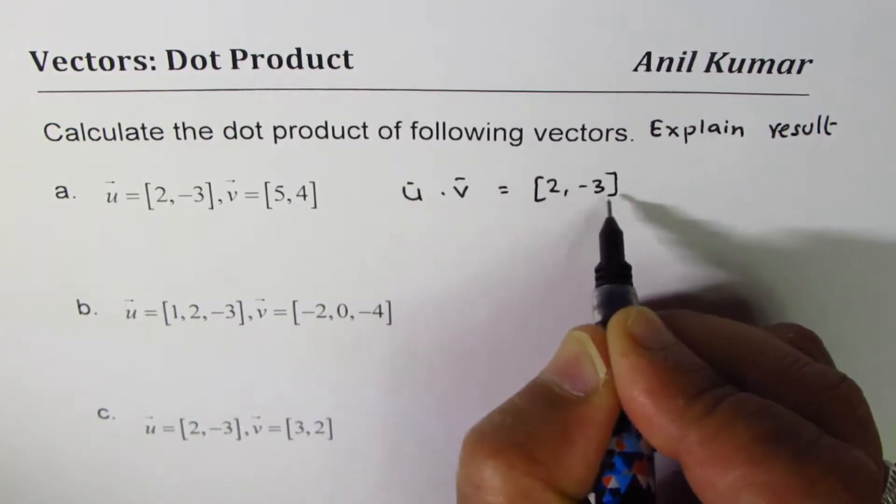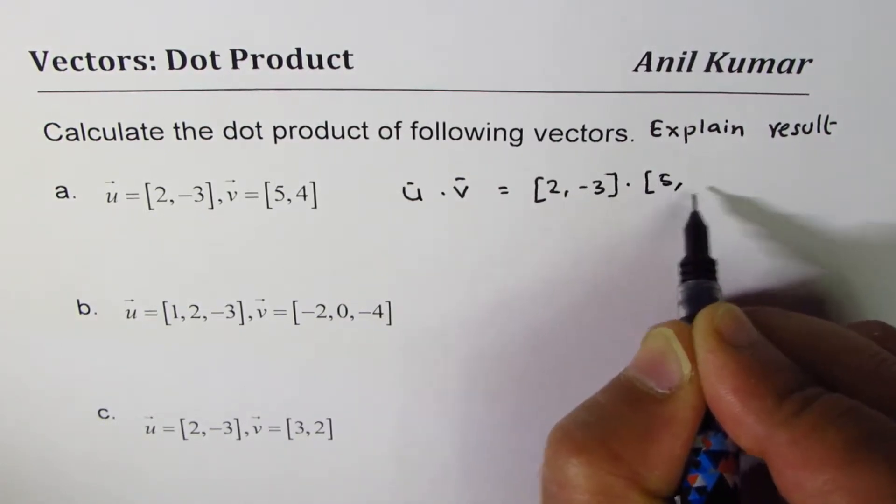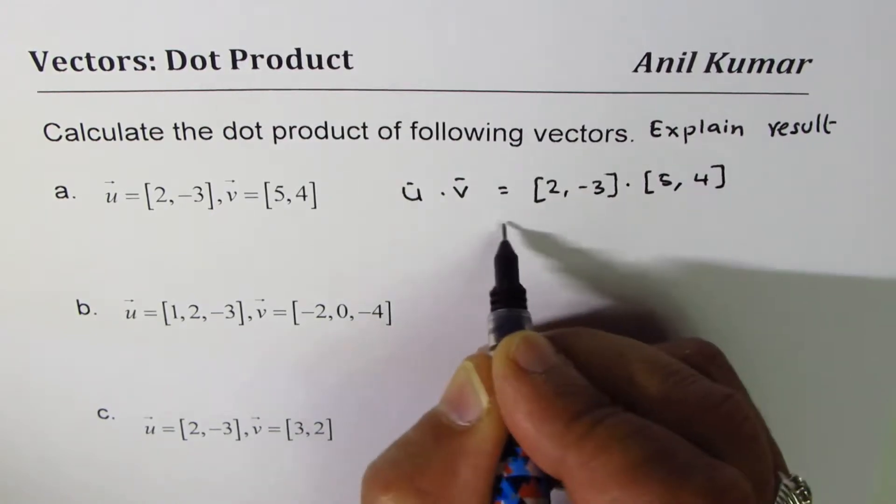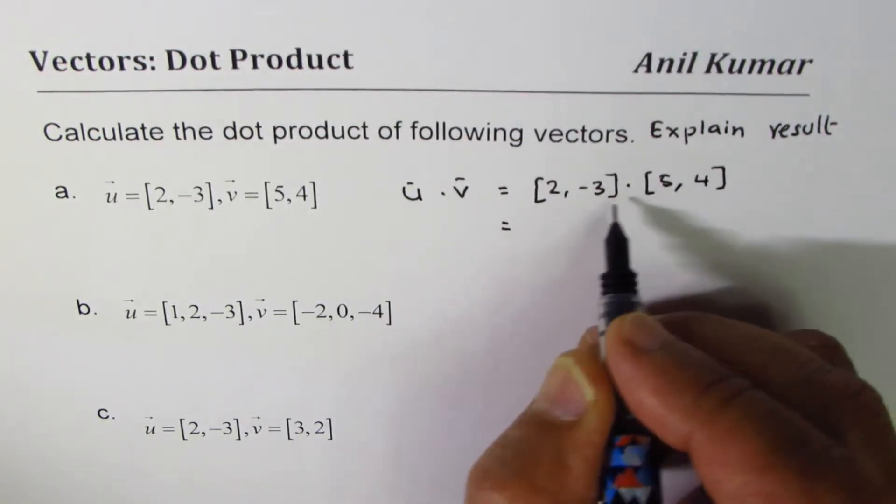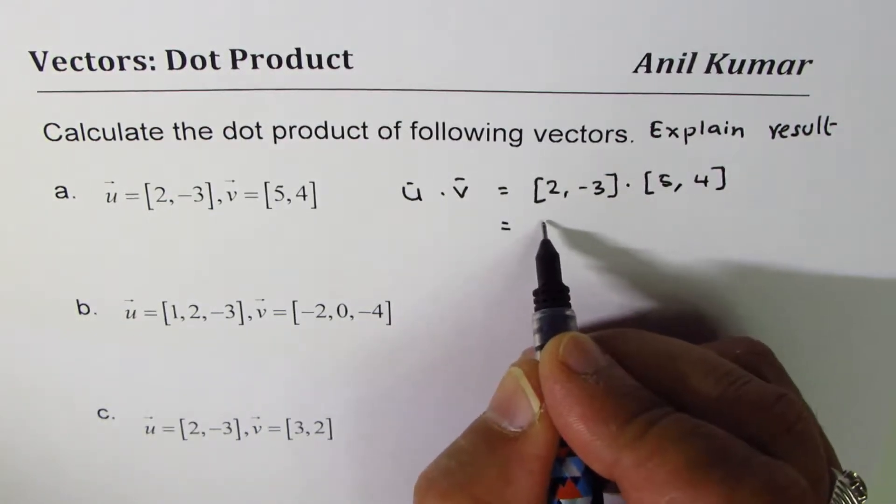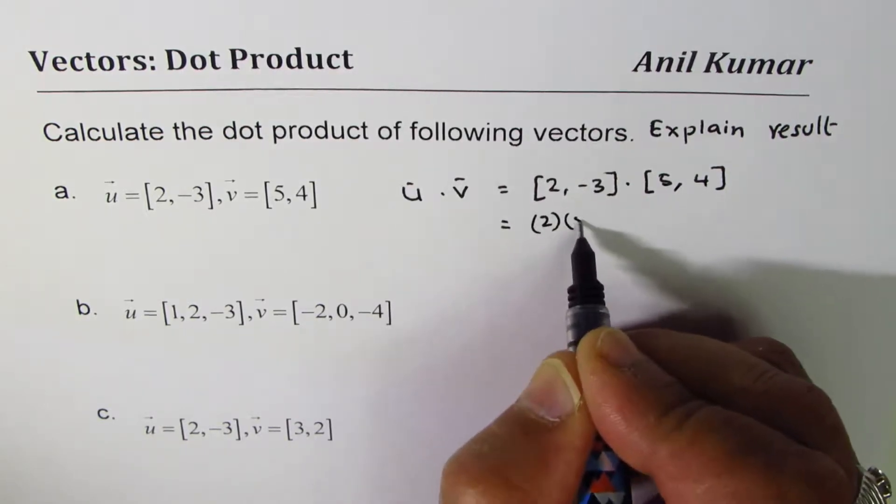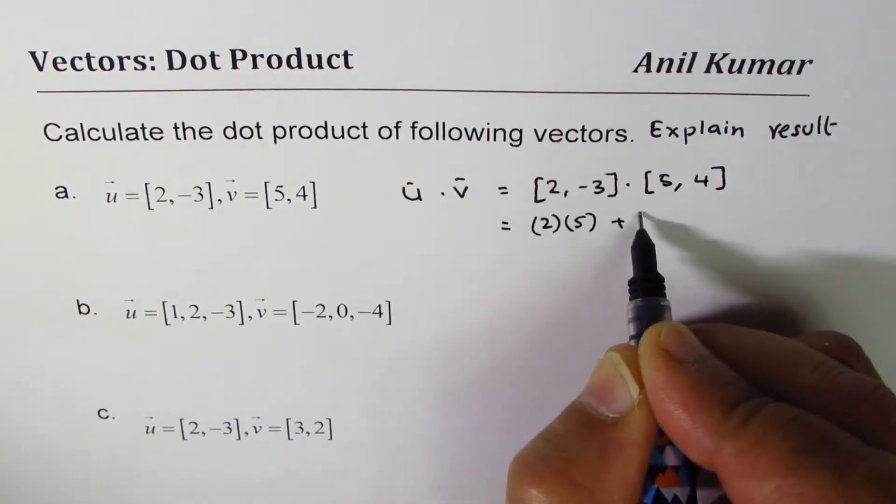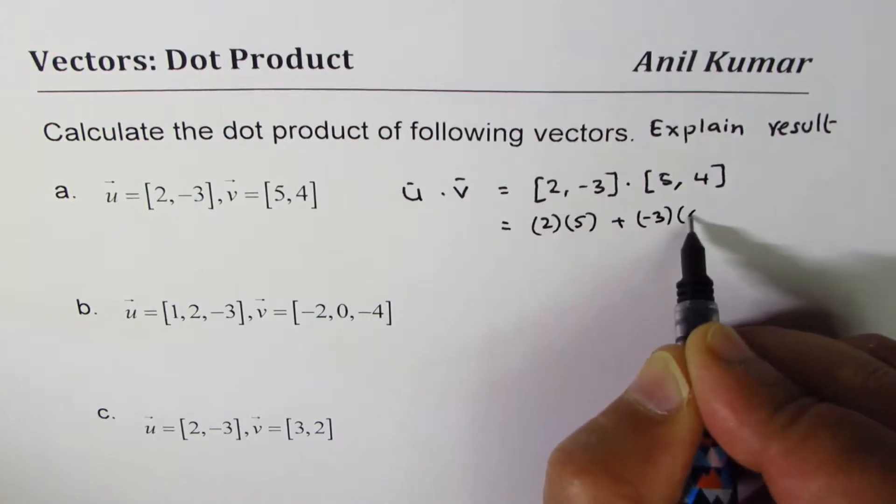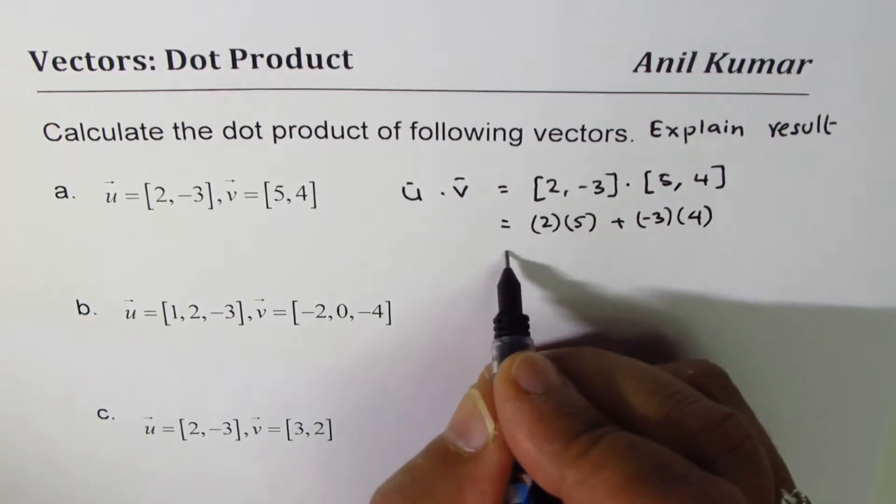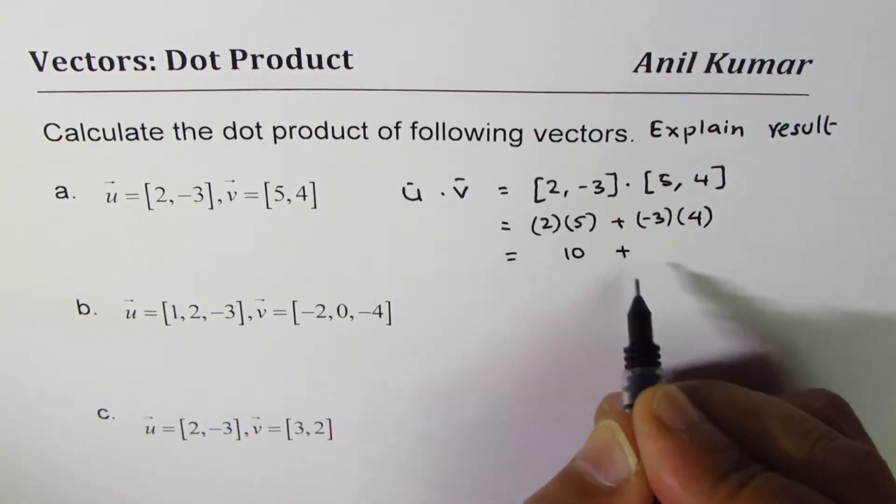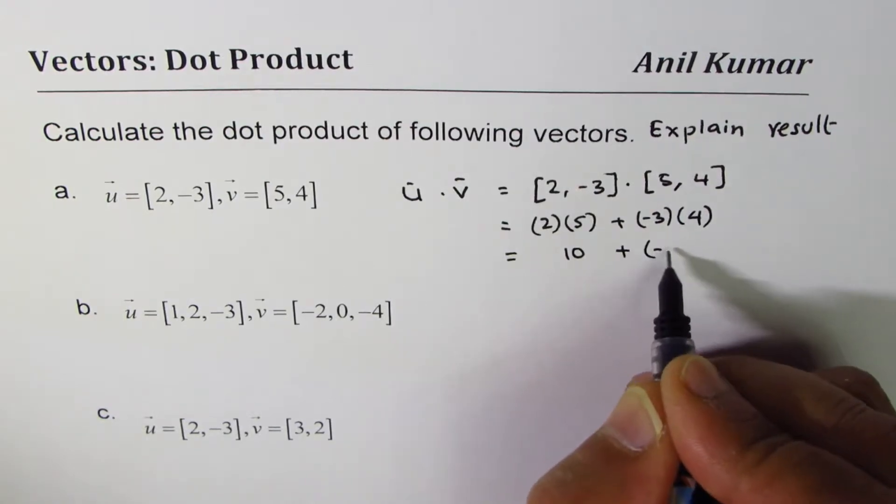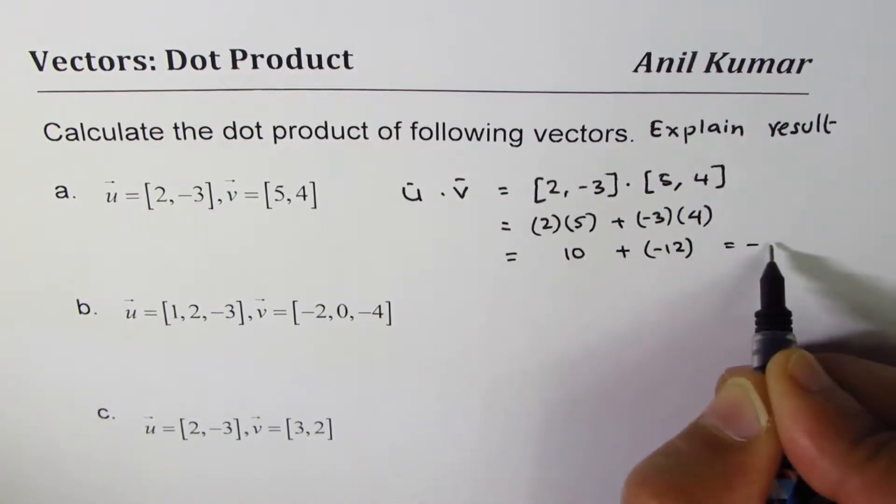Let's do the first one. Vector u dot vector v is [2, -3] dot [5, 4]. So 2 times 5 is 10, so it is 2 times 5 plus minus 3 times 4, and that gives us 10 plus minus 12. The result is minus 2.